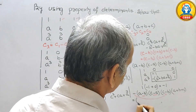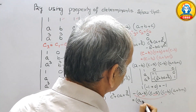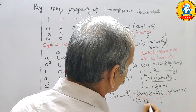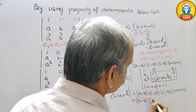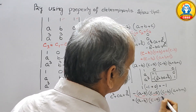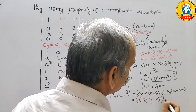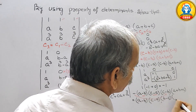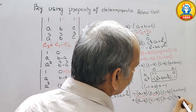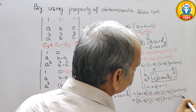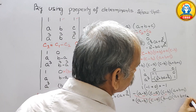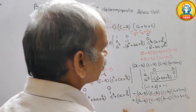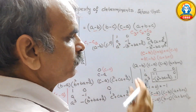So the answer is (a minus b)(c minus a)(b minus c)(a plus b plus c), which is exactly what we needed to prove. That is how we solve this determinant problem.